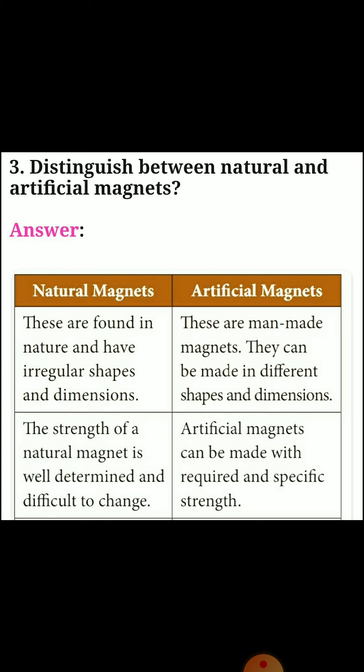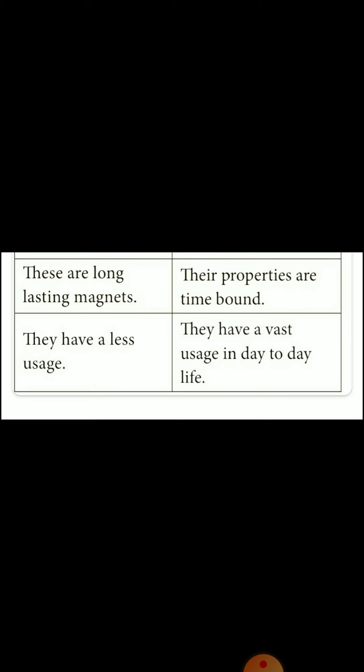Third one: distinguish between natural and artificial magnets. Difference: natural magnets are found in nature and have irregular shapes and dimensions, while artificial magnets are man-made and can be made in different shapes and dimensions. The strength of a natural magnet is not well determined and is difficult to change, whereas artificial magnets can be made with a required and specific strength. Natural magnets are long-lasting but have limited usage; artificial magnets have vast usage in day-to-day life.